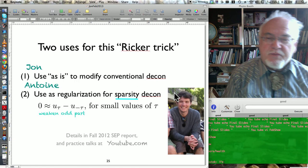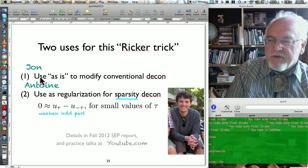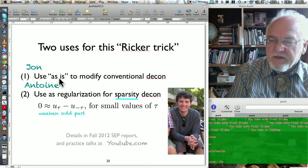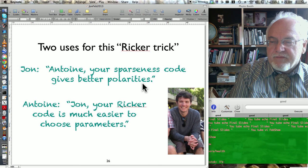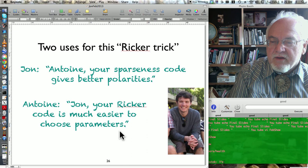Now there's two uses for this Ricker trick I'm telling you today. One that I'm using is I just use it as it is to modify conventional deconvolution. Antoine is doing sparsity deconvolution. Now when I say to Antoine, I say, Antoine, your sparseness code gives better polarities than my ordinary decon. And Antoine says to me, John, your Ricker code is much easier to choose the parameters. So let's talk about choosing the parameters.